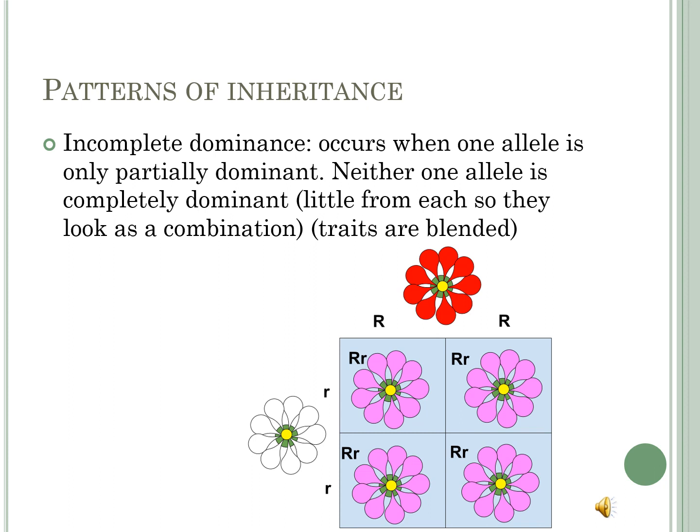One of the complex patterns of inheritance is called incomplete dominance. Incomplete dominance occurs when one allele is only partially dominant — neither allele is completely dominant. In this case, the offspring takes a little from each, so they look like a combination, or the traits are simply blended and they produce a new trait or a new characteristic.